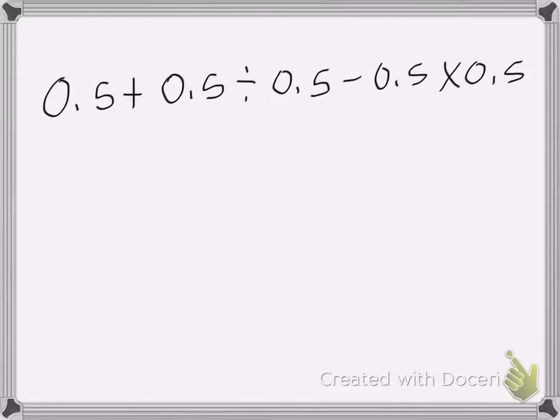Okay, so here we have 0.5 plus 0.5 divided by 0.5 minus 0.5 times 0.5. This one's a little trickier. So let's do it step by step. So we're going to start on the left, and we're going to look at my numbers. I don't do anything with this one yet, so I'm just going to bring it down. 0.5 plus.